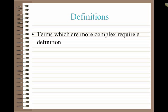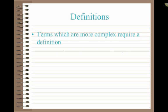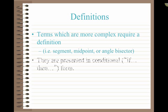Definitions. Now, these become a little more important. Terms which are more complex, we give a definition to. Something like segment, or midpoint, or angle bisector. They are always presented in conditional form. So, you might say, if a point divides a segment into two congruent parts, then it is a midpoint. Or, if a ray is an angle bisector, then it divides an angle into two congruent parts. We'll learn these definitions later. But I just want you to be aware of the structure and the format that these are presented in this book.